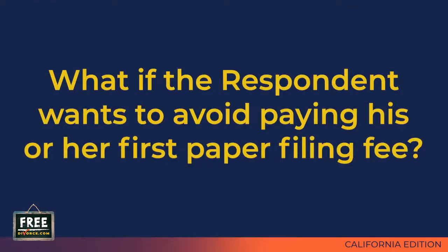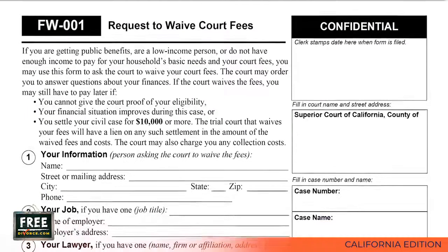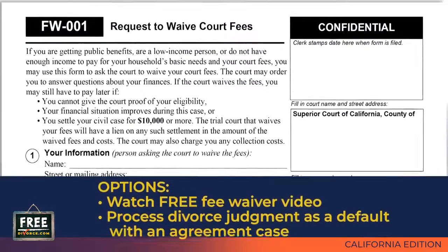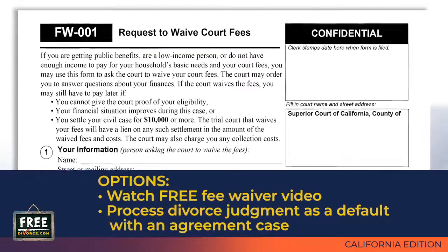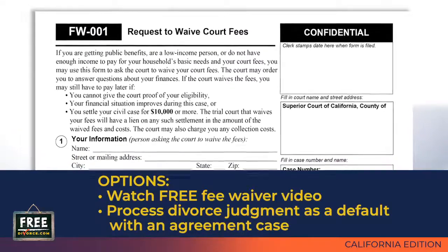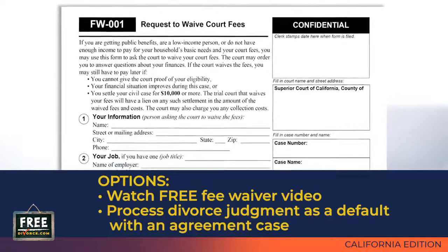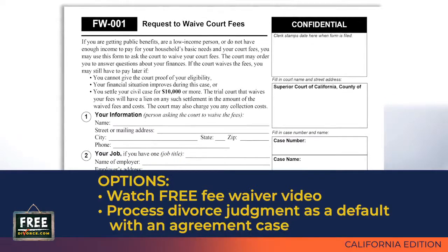What if the respondent wants to avoid paying his or her first paper filing fee? One option is to see if the respondent qualifies for a fee waiver. The respondent can fill out a fee waiver application, which is FW-001. The respondent can watch our free fee waiver video to learn how to fill out the application. The other option is to process your divorce judgment as a default with an agreement case.